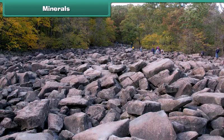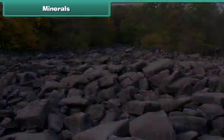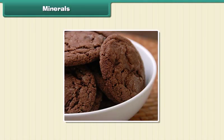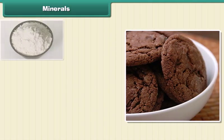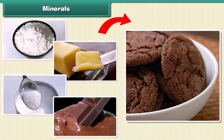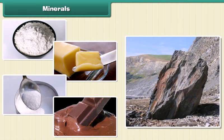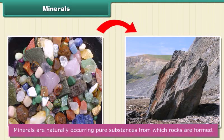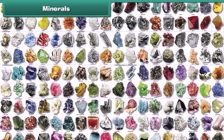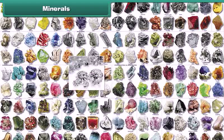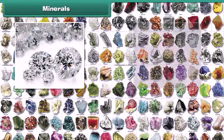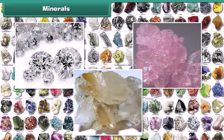We have learnt about rocks. All rocks are made of minerals. Think of a chocolate cookie as a rock — the cookie is made of flour, butter, sugar, and chocolate. The cookie is like a rock, and the flour, butter, sugar, and chocolate are like minerals. Thus, minerals are naturally occurring pure substances from which rocks are formed. There are about 3,000 different minerals in the world, among which diamond is the hardest mineral. Quartz and calcite are two common examples of minerals.